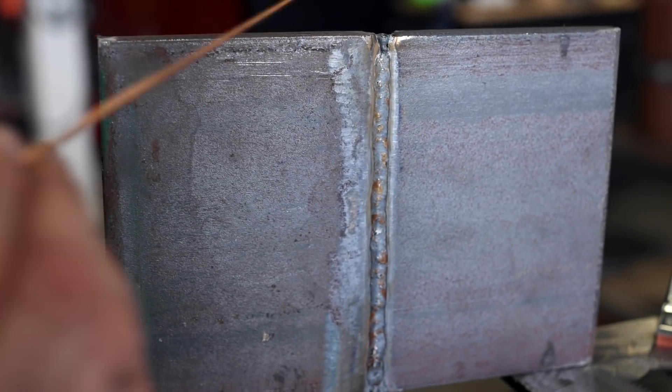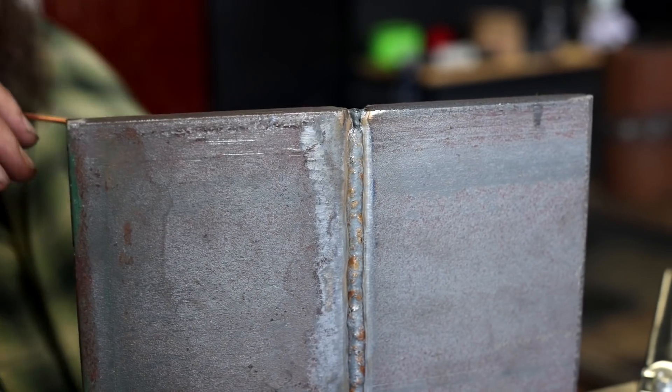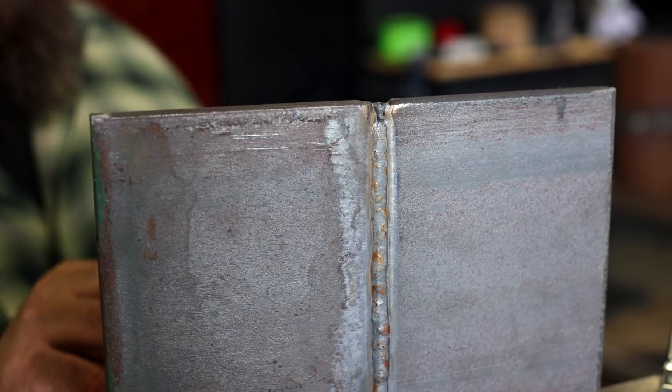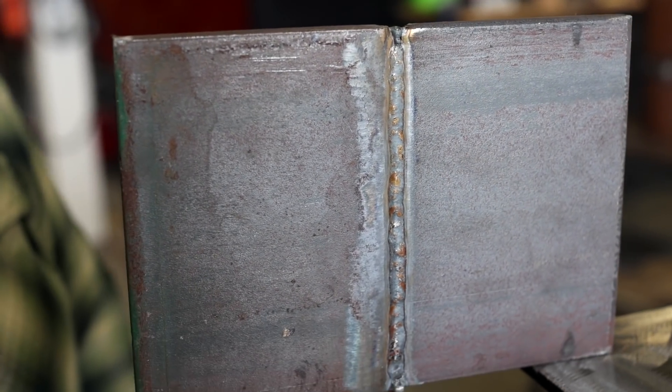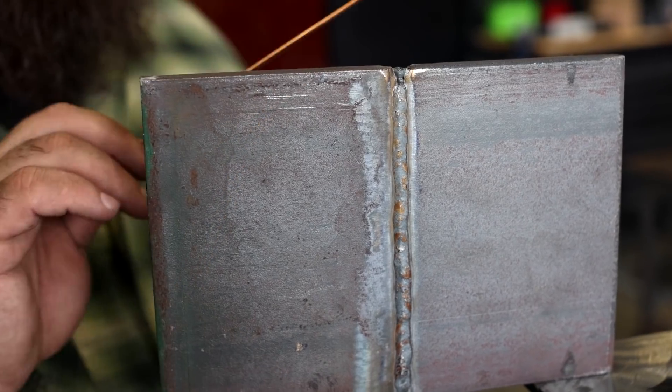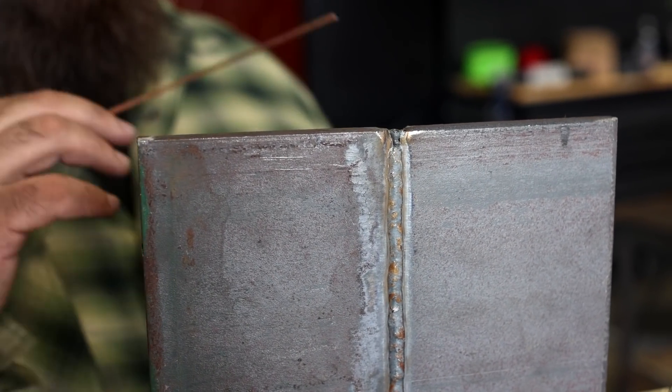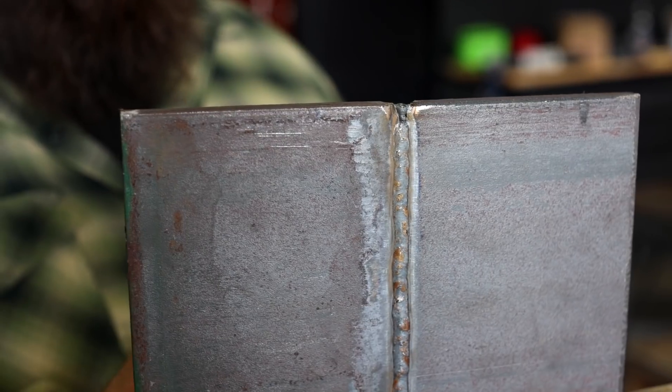So when I'm starting, first thing is you're going to have to come off a tack and they need to be bridge tacks. You don't want to try to tie in or limit your tie-ins to a tack prior. That's just been my experience. Once you start on and build that bridge across your bevel to bevel, you want to stay on the leading edge of your puddle.